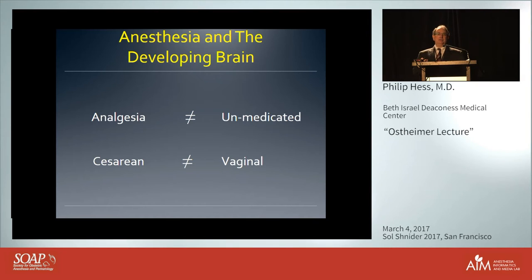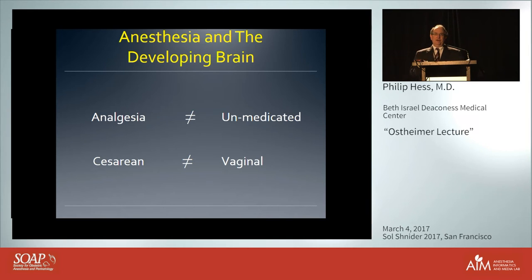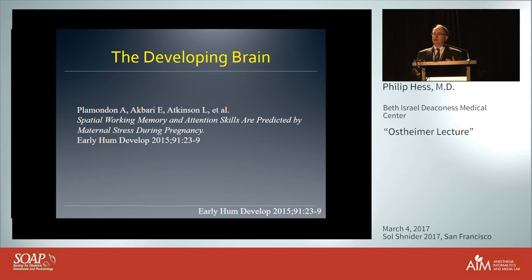If the history of obstetric anesthesia says anything, it taught us that A does not equal B. Women who request epidural analgesia are not the same as those who have unmedicated births; there are significant measured and unmeasured factors leading to selection bias. Similarly, women who need cesarean delivery are not the same as those who can have vaginal delivery. Epidurals don't cause C-sections. But the FDA has declared we must be concerned about drugs and techniques used on the developing brain, because there can be significant impacts.